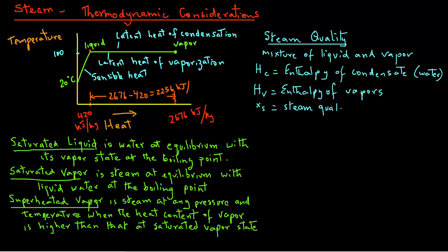XS is the steam quality given in fractions. If this value of XS equals 1, that means it is 100% vapor. If XS is 0, then it is 0% vapor, or in other words, it is in liquid state.